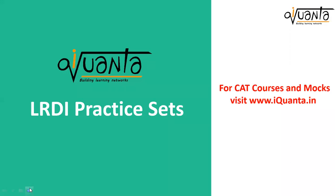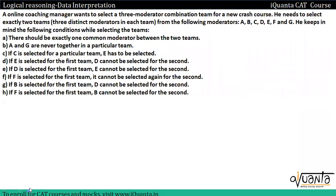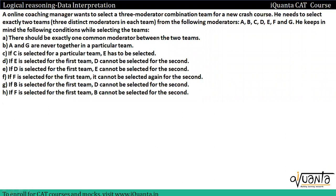Hi everyone. In this video we will understand how we can solve this type of set. An online coaching manager wants to select a three-moderator combination team for a new crash course. He needs to select exactly two teams with three distinct moderators in each team from the following moderators: A, B, C, D, E, F, and G.